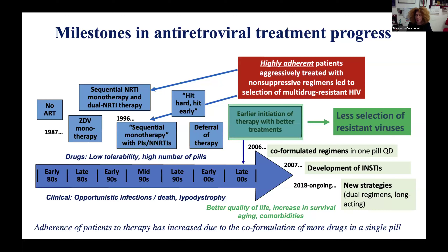In the late 2000s, we started early initiation of therapy with better treatments with high genetic barrier, resulting in much less selection of resistant viruses. We improved co-formulated regimens into one pill. From 2007, integrase inhibitors became available, and from 2018, new strategies like dual regimens and long-acting formulations. Today the clinician faces better quality of life for people living with HIV, increasing survival, aging, and comorbidities.